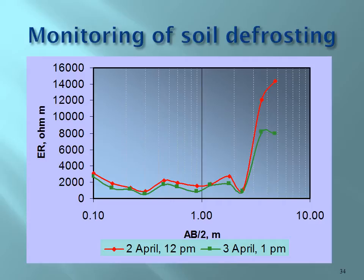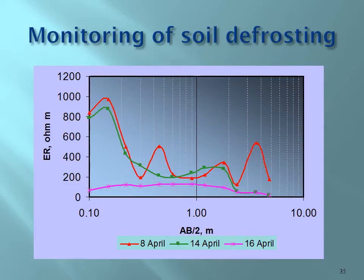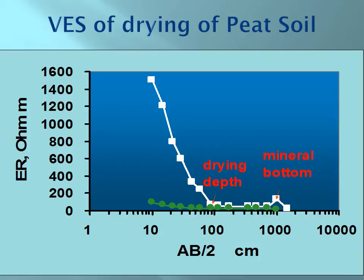When soil water freezes, it dramatically changes electrical resistivity. We set up electrodes in the fall and then in spring, as snow began melting, monitored how deep the frozen layer was. The frozen layer was very shallow — about 30 centimeters — and with each day's measurement the resistivity values changed, until finally on April 16th the whole profile was below 200 ohm-meters.